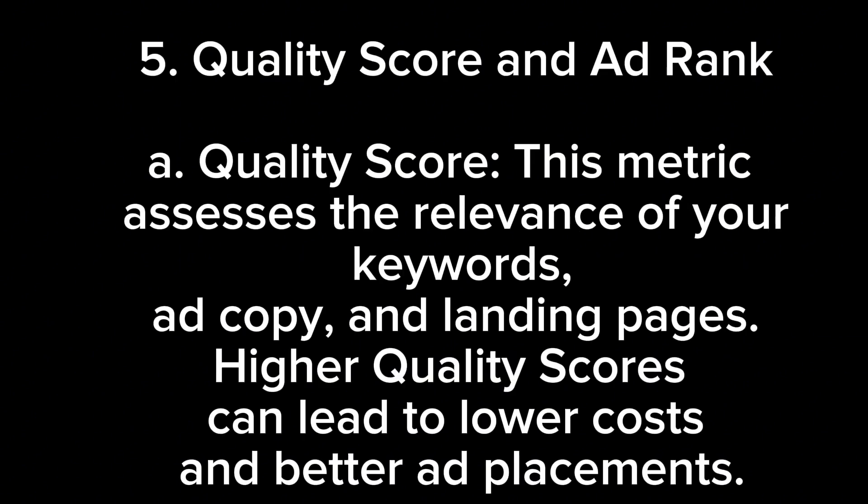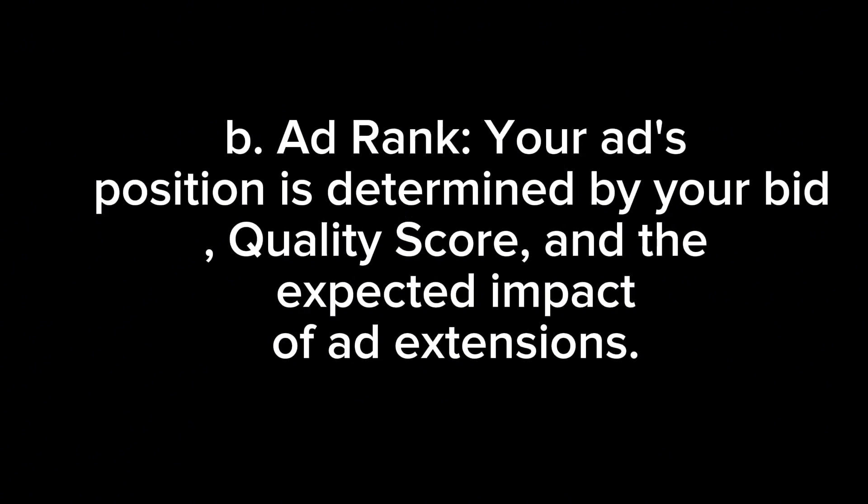5. Quality Score and Ad Rank. A. Quality Score: This metric assesses the relevance of your keywords, ad copy, and landing pages. Higher quality scores can lead to lower costs and better ad placements. B. Ad Rank: Your ad's position is determined by your bid, quality score, and the expected impact of ad extensions.